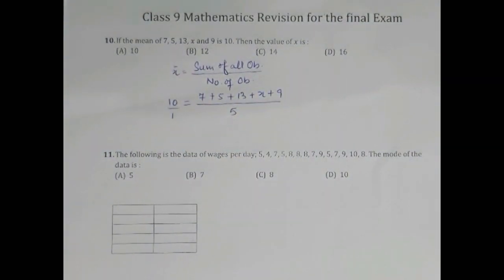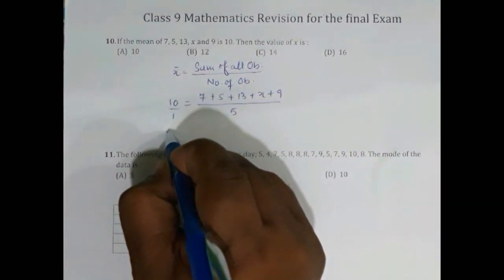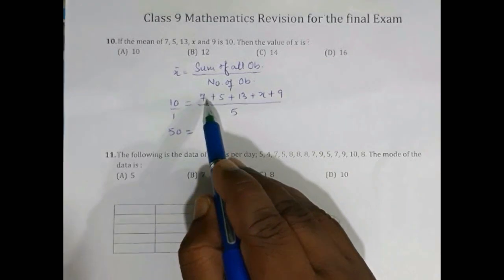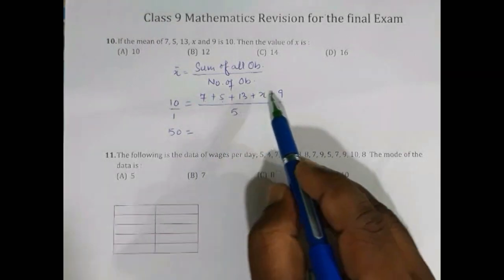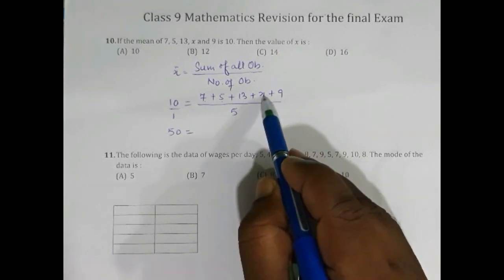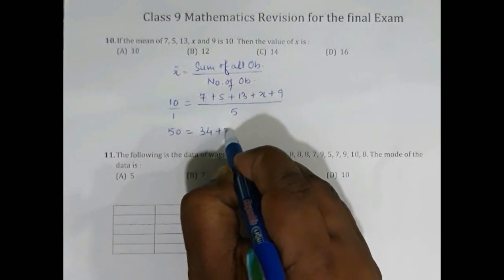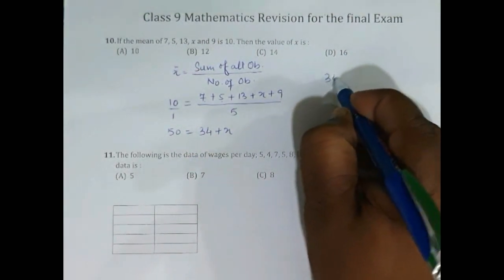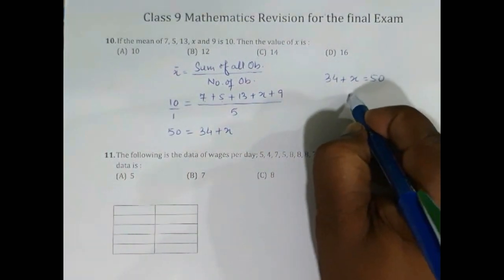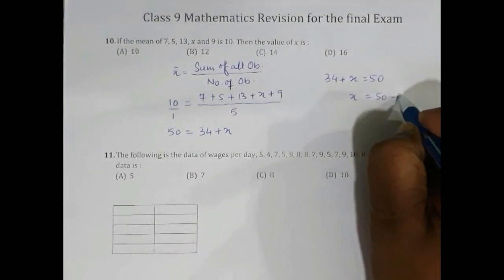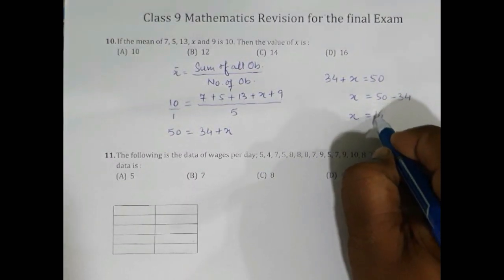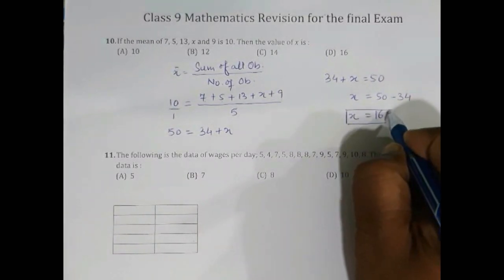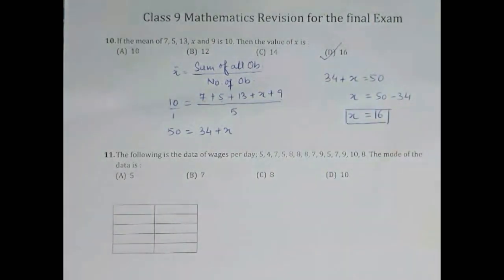Now cross multiply: 10 × 5 = 50, equals the sum of 7 + 5 + 13 + x + 9. Finding the sum: 13 + 7 = 20, + 5 = 25, + 5 = 30, + 4 = 34. So 34 + x = 50, therefore x = 50 − 34 = 16. The answer to this question is option D, which is 16.